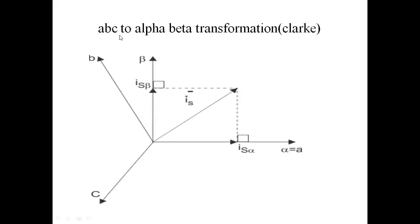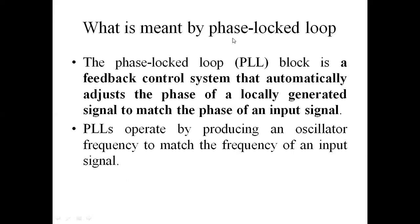This is the Clark transformation. Clark transformation converts ABC to alpha-beta. A, B, and C are 120 degrees phase shifted. The output IS alpha and IS beta have a space angle difference of 90 degrees. PLL means phase lock loop. PLL locks the input frequency and output frequency by producing an oscillator frequency to match the frequency of the input signal.